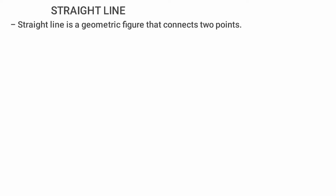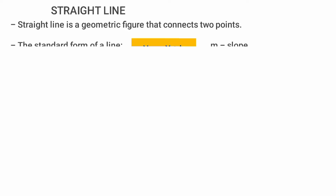This is a straight line. A straight line is a geometry figure — it connects two points. This is a cornered plane. This is a straight line. The standard formula.